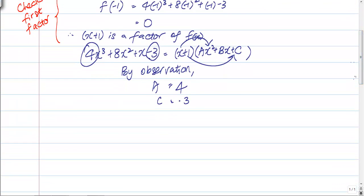With that, we are left with the last unknown, which is b. However, for b, we cannot use observation anymore. Instead, we need to compare coefficient. I'm going to be comparing coefficient of x squared. On the left-hand side, it's equal to 8.